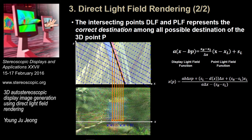This slide shows how we can find the right destination. The blue dots are light rays from the 3D display, and the blank lines show the 3D point in the light field. The intersecting point between the display light field function (blue lines) and the point light field function (blank line) represents the correct destination among all possible destinations of 3D point P. This can be easily defined by a simple linear system, where the left part of the equation represents the blue lines and the right-hand side represents the point light field. We can then compute the location X and assign the information of P to that location.